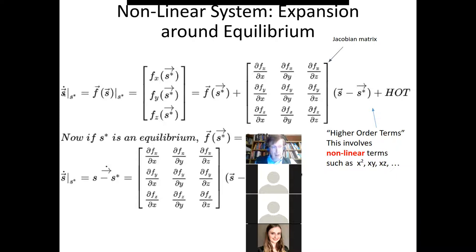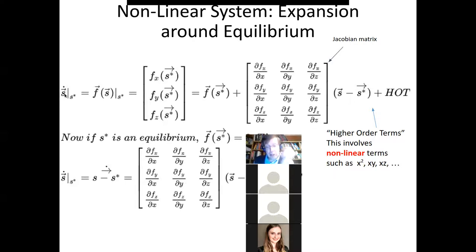When we're dealing with systems, we can represent them using a state vector. So lowercase s is a state vector — for example it might be capital S, capital I, and capital R, which characterizes the current state, or it might be S-E-I-R. The evolution of a system like that is S-dot, the rate of change of S over time, equals some function of the current state. That's almost the definition of a dynamical system — how the current situation is changing depends on its current state.